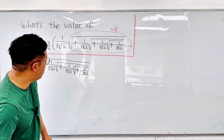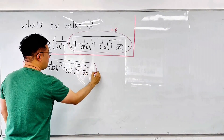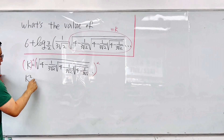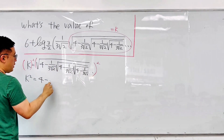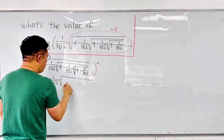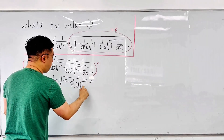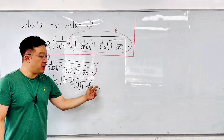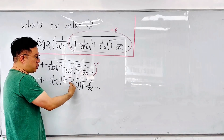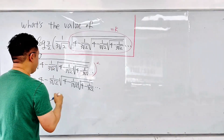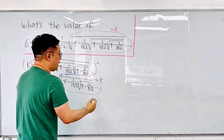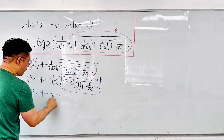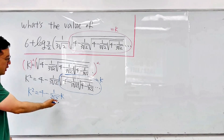Let me square the left and right-hand side. If we square both sides, we can remove the outer square root. The left-hand side becomes K², and the right-hand side becomes 4 minus 1 over 3√2 times the square root of 4 minus 1 over 3√2 and so on. Now that inner square root part is also equal to K, since we're working with an infinite nested radical.